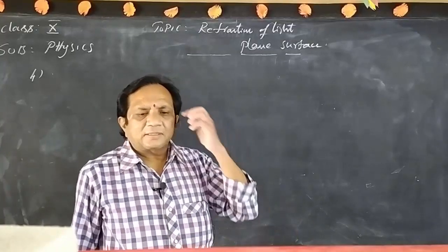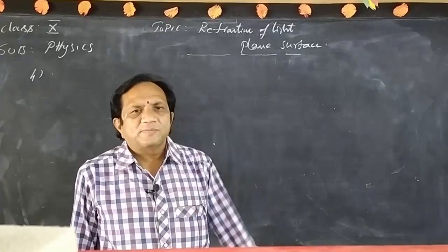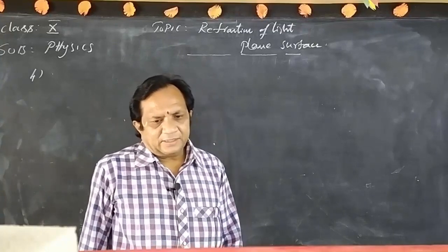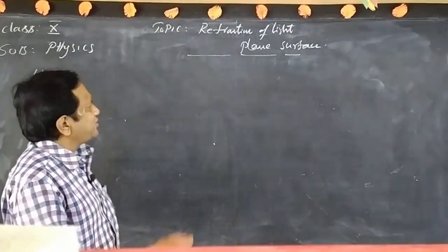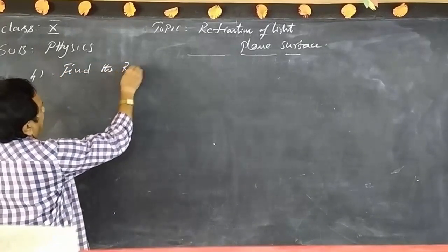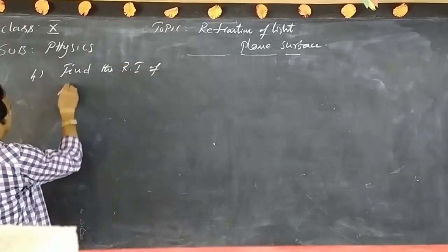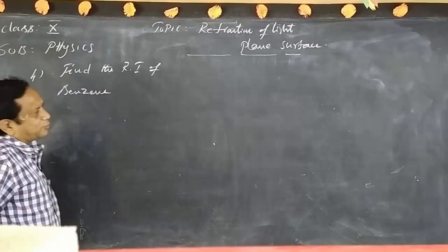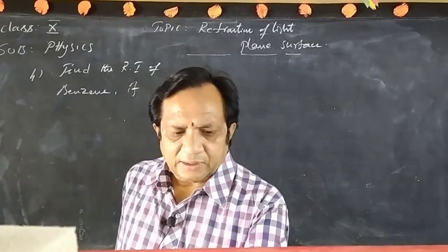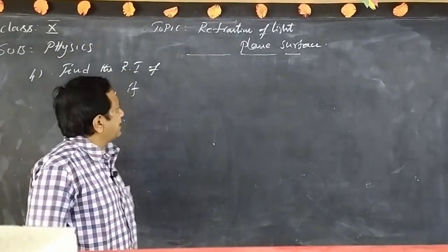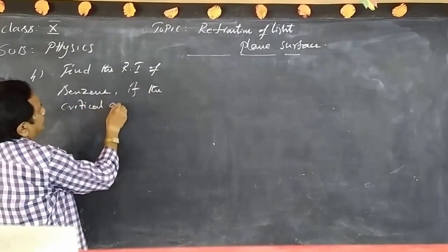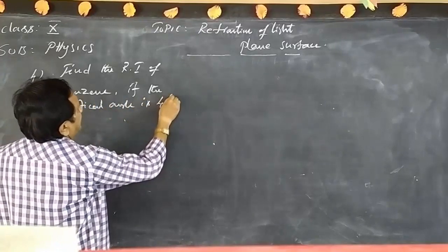In the previous class we discussed a few problems. Continuing with the next problem: determine the refractive index of benzene, given that the critical angle is 42 degrees.